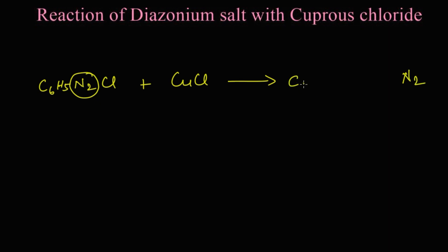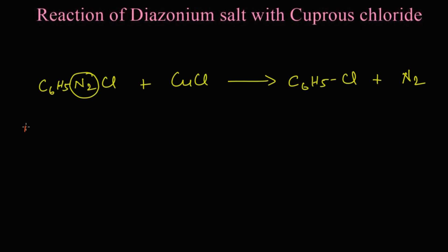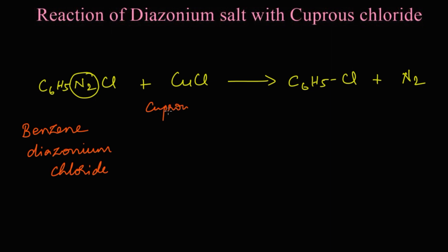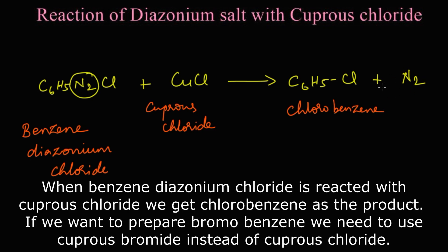We get C₆H₅Cl, which is called chlorobenzene. Let's write the names for the structures: this is benzene diazonium chloride, this is cuprous chloride, and we get chlorobenzene and nitrogen gas. Let's summarize the reaction.